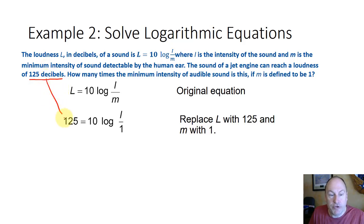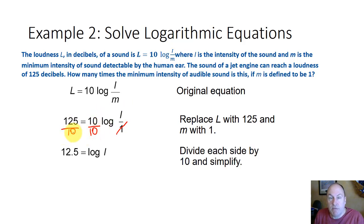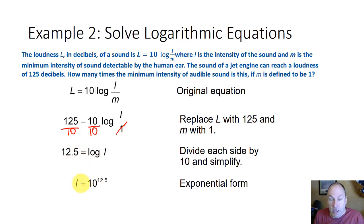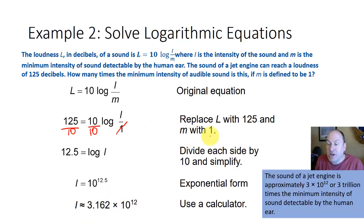If we replace L with 125 decibels and M with 1 decibel, we get 125 equals 10 times the log base 10 of I divided by 1, or 125 equals 10 log I. Dividing both sides by 10 gives 12.5 equals the log of I. Writing this in exponential form, I equals 10 to the 12.5 power. Using a calculator, I equals approximately 3.162 times 10 to the 12th — about 3 trillion times the minimum sound detectable by the human ear.